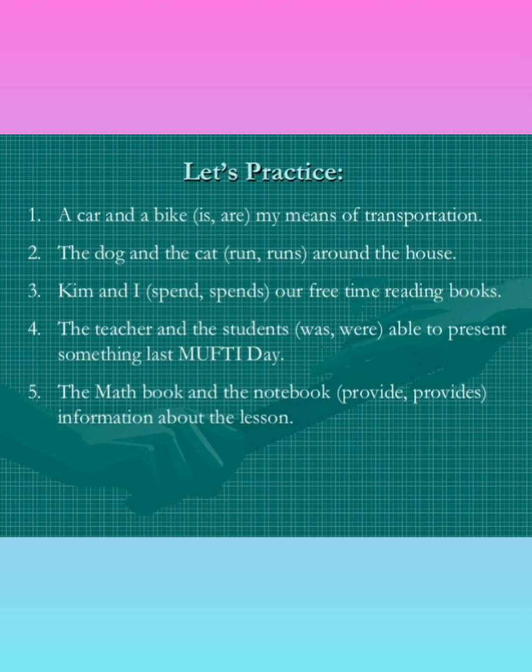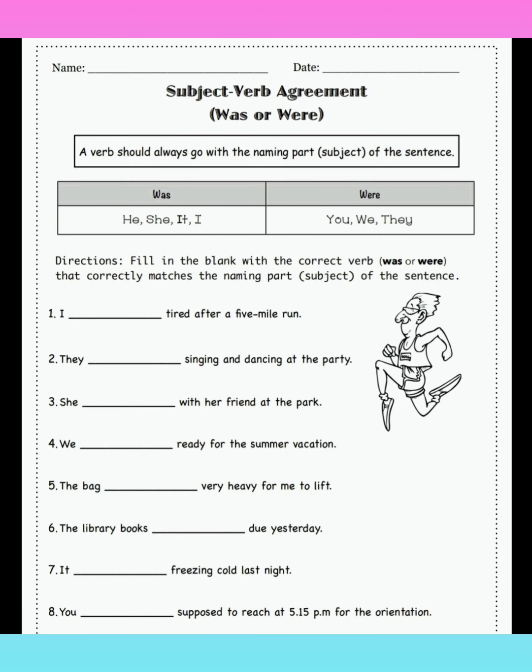I hope you can do it. Please solve these exercises in your language copy, and after solving please send them to me. You will also get these exercises on your website — the exercises will be available from Friday morning. Here you also have to do this exercise on subject-verb agreement: was or were. A verb should always go with the naming part — the subject of the sentence. With he, she, it — it will be 'was.' And with you, we, they — 'were.'